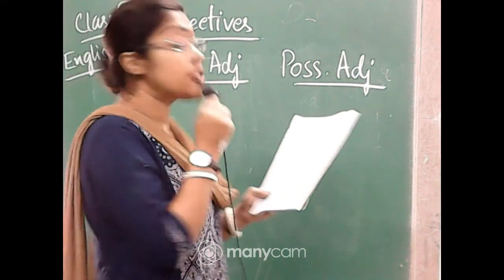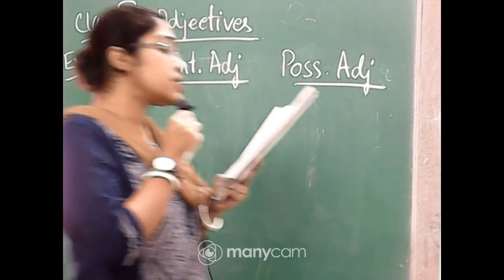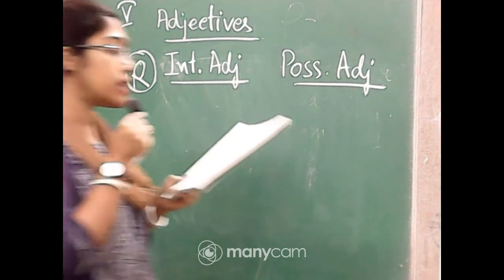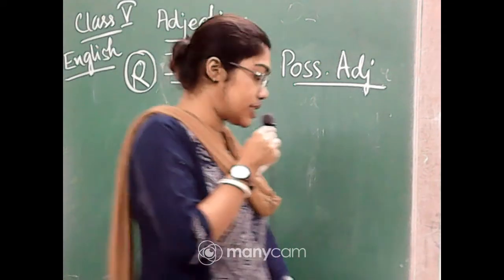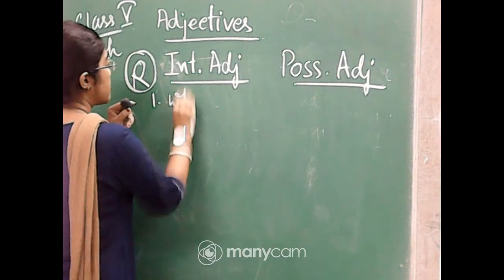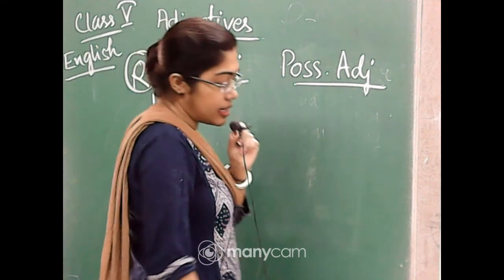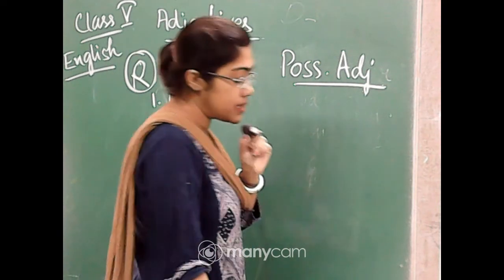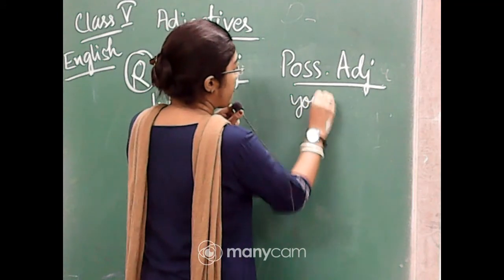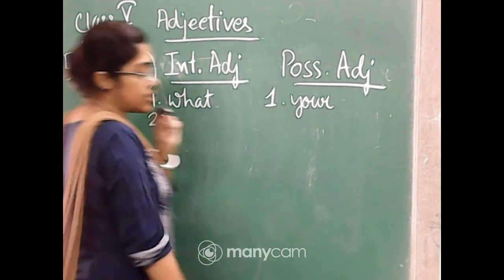First we will find out the interrogative adjectives. 'What time are you leaving for your school?' — here the interrogative adjective is 'what,' and the possessive adjective is 'your.' Number two: 'Whose books is Vinnie holding in her hand?' — 'whose' is the interrogative adjective.